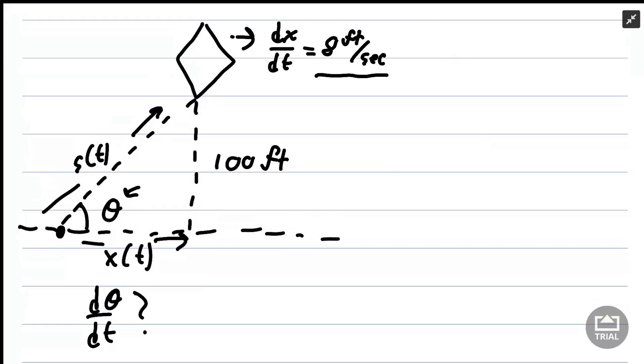We have a kite that is 100 feet above the ground and it moves horizontally at a speed of 8 feet per second. We want to know what rate is the angle between the string and the horizontal decreasing when 150 feet of string has been let out.